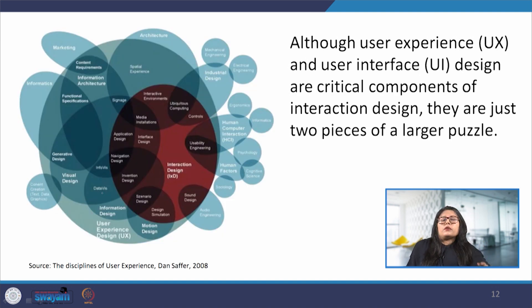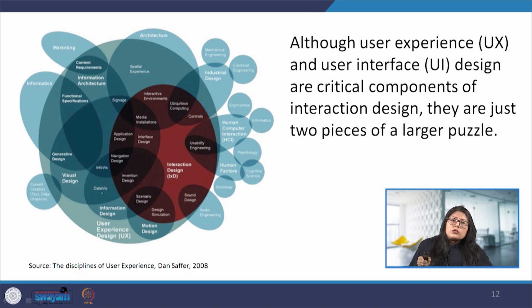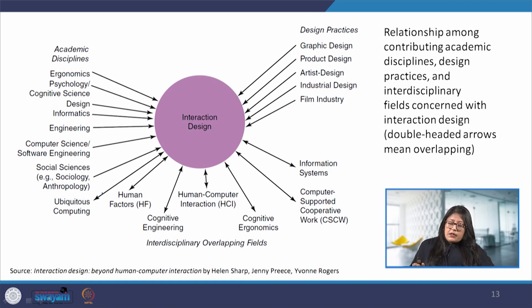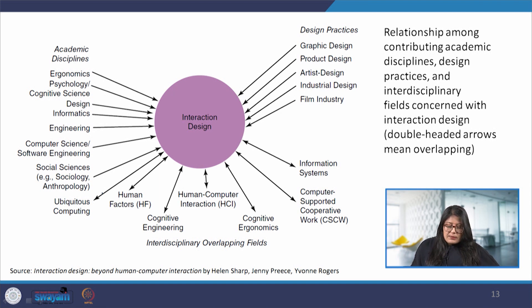Interaction design is not simple — so many different domains are interlinked in creating this ecosystem. Several academic disciplines inform interaction design, including ergonomics, psychology, design, and informatics. Design practices such as graphic design, product design, and industrial design also inform it. At the same time, areas like human factors, cognitive engineering, cognitive ergonomics, and computer-supported cooperative work all inform interaction design — and interaction design in turn also informs them.